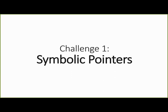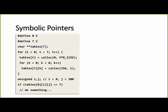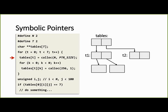First challenge, which relates to symbolic pointers. Let's see using this example how symbolic pointers are generated. We start execution with this allocation of the array of tables, and then we have this initialization loop where in the first iteration we allocate the table of pointers t1, and in the second iteration we allocate another table t2.